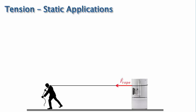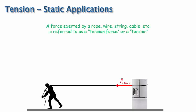As a matter of nomenclature, a force exerted by a rope, wire, string, cable, etc., which all have the characteristic of being flexible objects, is referred to as a tension force or tension. And the symbol used for a tension force vector is a capital T like this.